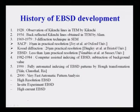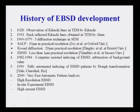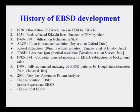EBSD has a long history. About 90 years back, in 1928, Kikuchi from Japan first observed Kikuchi patterns — Kikuchi lines. Although it has been reported that he postulated the possibility of formation of Kikuchi lines in electron diffraction patterns, Kikuchi later confirmed these lines exist when TEM was discovered, and they are basically due to elastic scattering of electrons. Then, after about another 26 years in 1954, black reflected Kikuchi lines were observed in TEM by Alam.